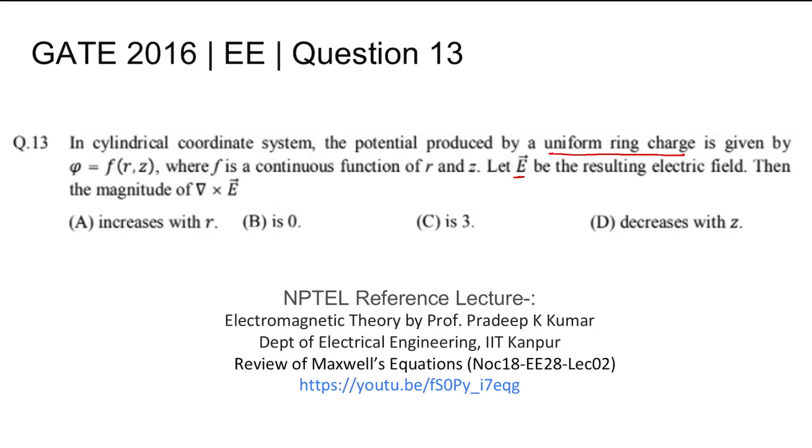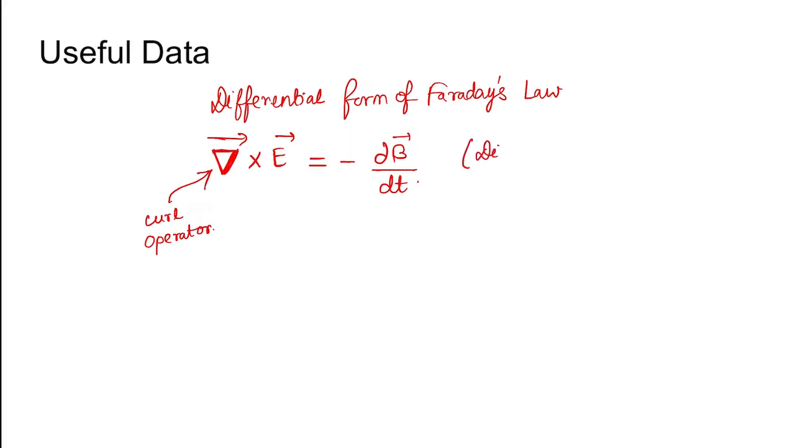In order to solve this question, we need some useful data. Remember the differential form of Faraday's law, which is also one of Maxwell's equations. Curl of E (this is curl operator, these are point operators) equals minus dB/dt, where E is electric field and B is magnetic field. This is in differential form.